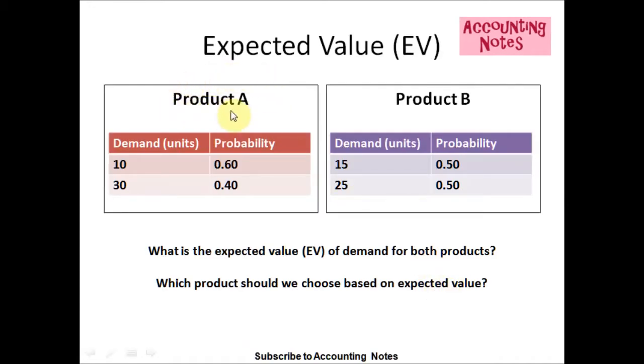We have two products, Product A and Product B. For Product A, the demand in units is 10 for week 1 and 30 for week 2. The probability is 60% for week 1 and 40% for week 2.